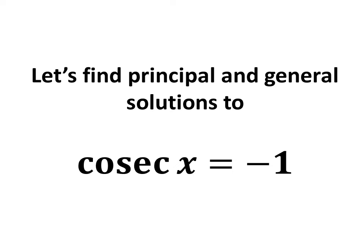In this video, we will learn to find the principal and general solutions to the equation cosecant of x is equal to minus 1.